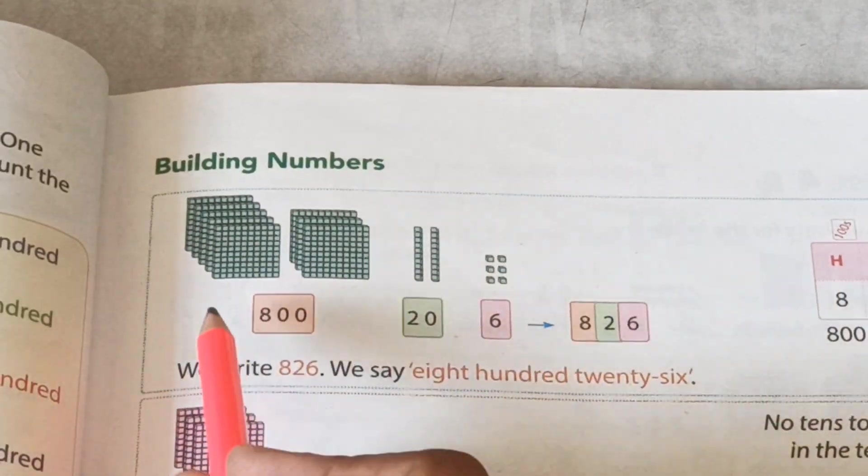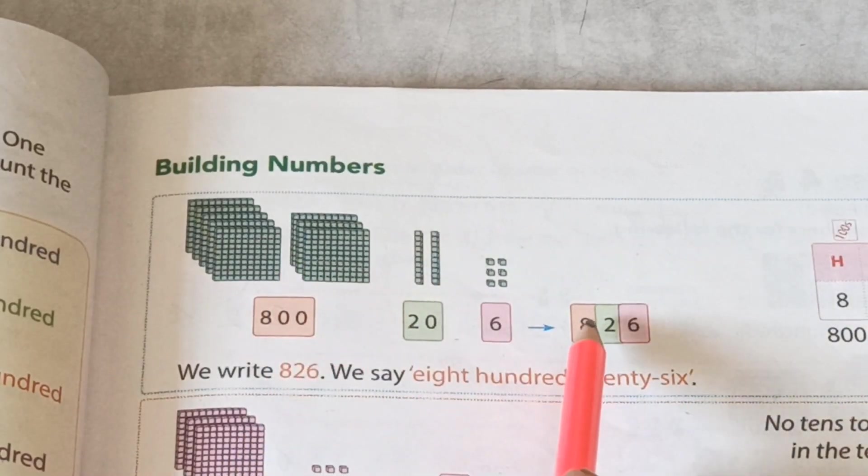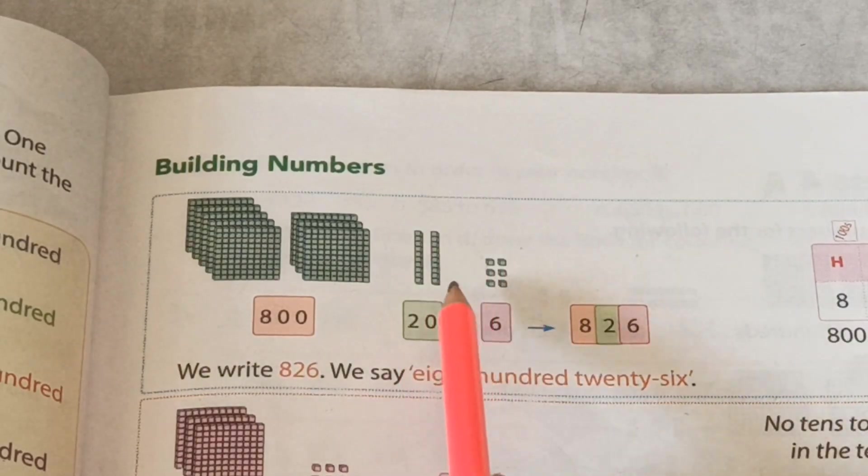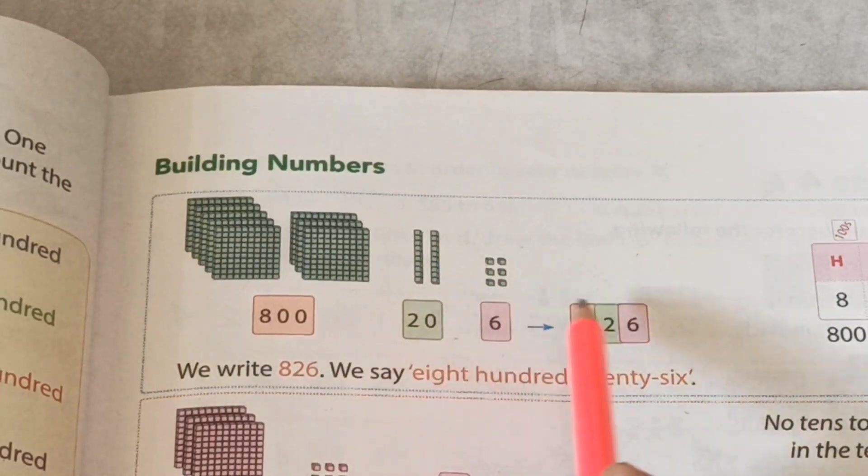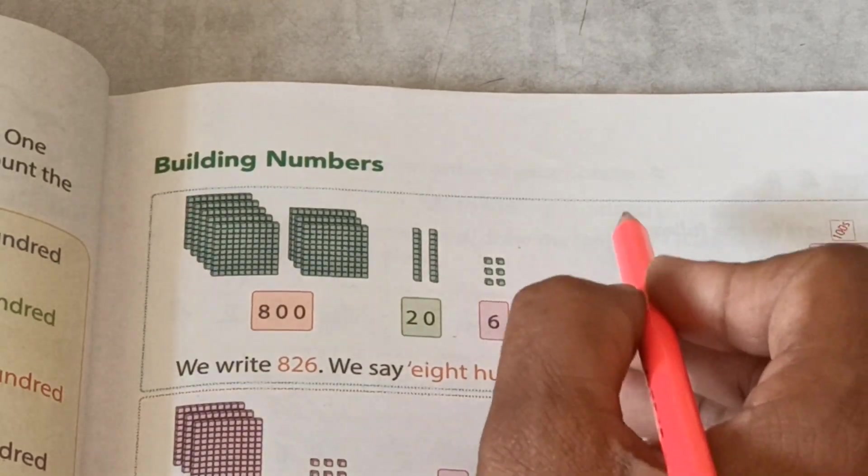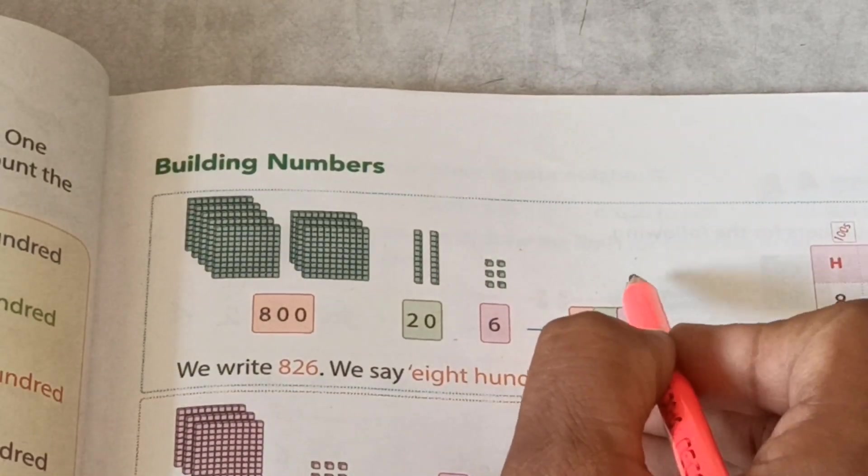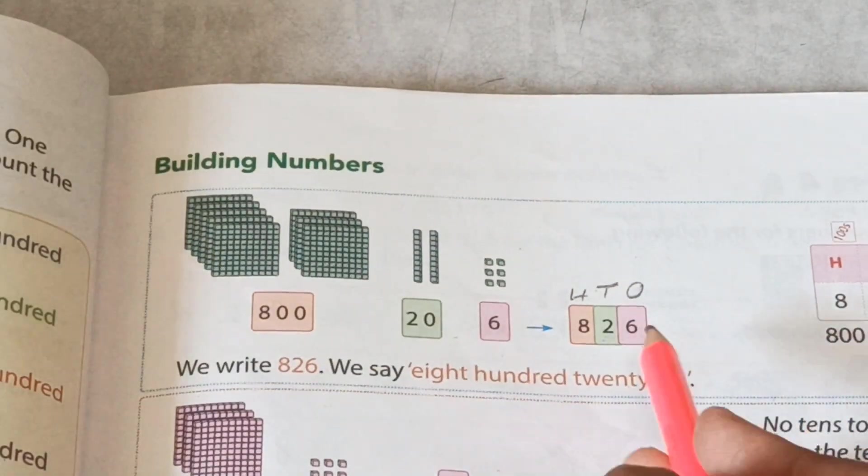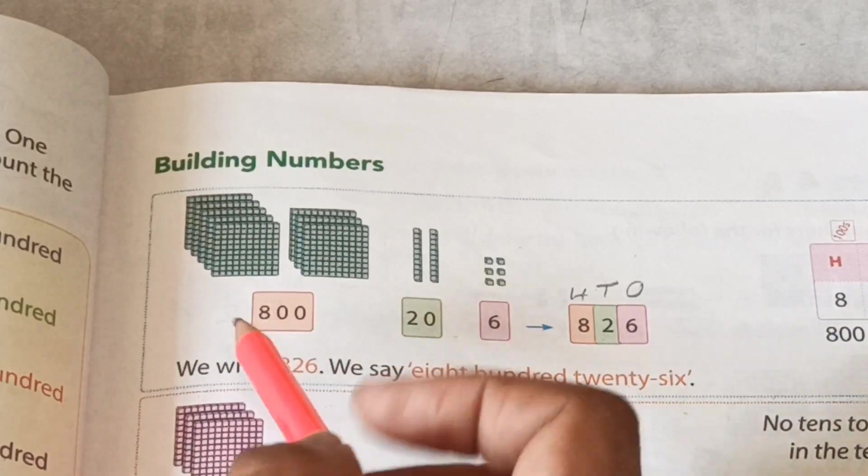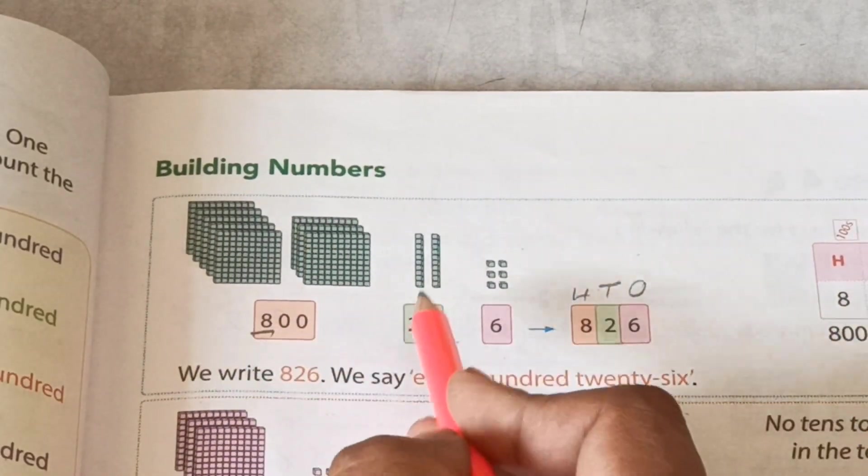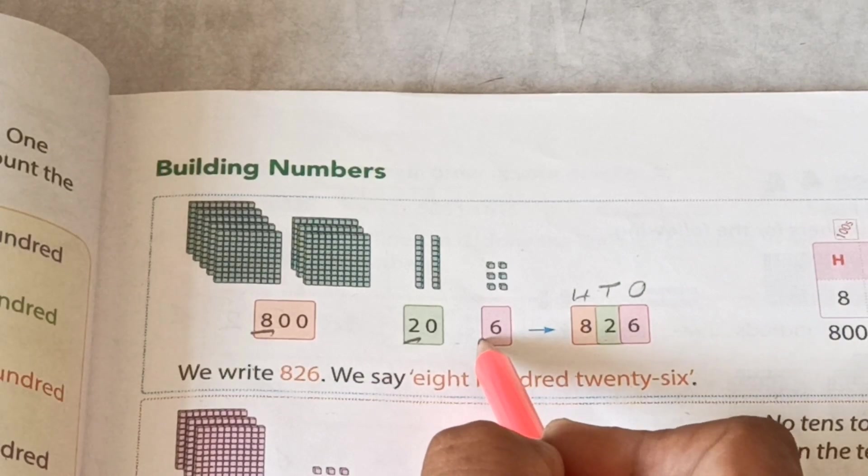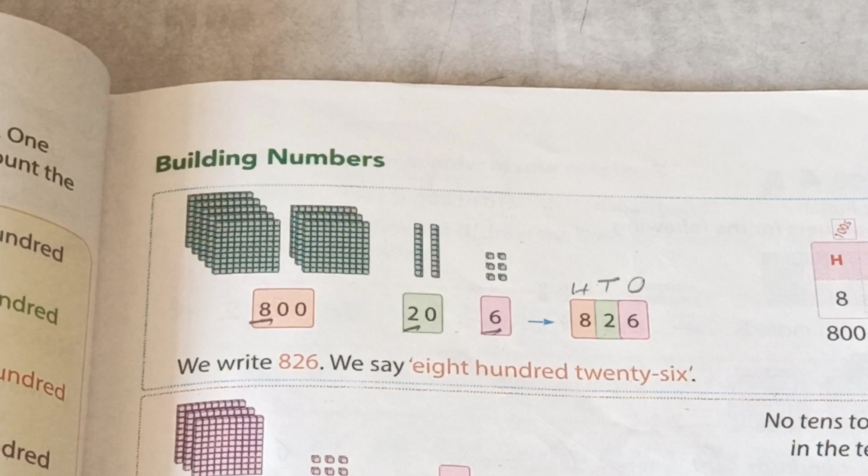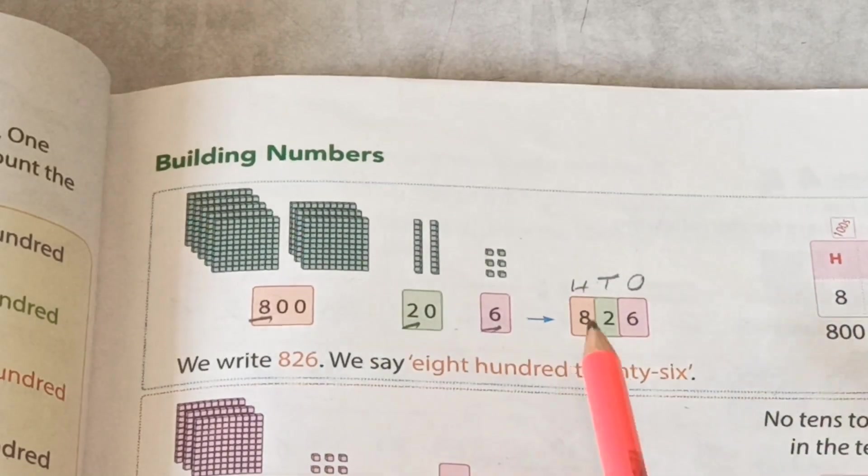Okay, then how do we form this number? 800 means only write down 8. 20 means 2 tens, write down 2. This one is ones place, this one is tens place, this one is hundreds place. So 800, 2 tens, and 6. How do we read this number? 826.